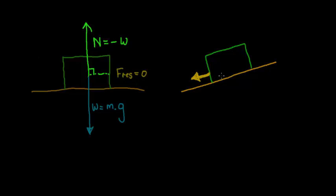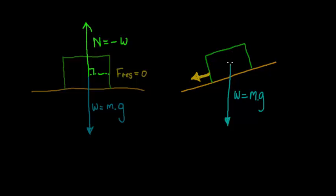Think of it like this. If we have our weight, which is vertically downward, we no longer have the normal force in the opposite direction of the weight. Now all of a sudden, the normal force is acting in a different direction - perpendicular to the surface. There is the normal force, which is now what is perpendicular to the surface.